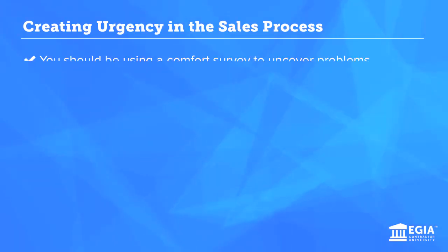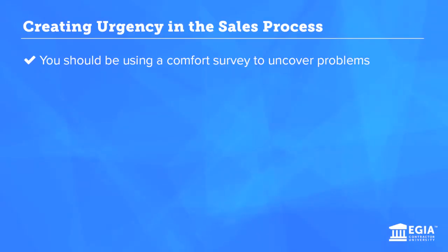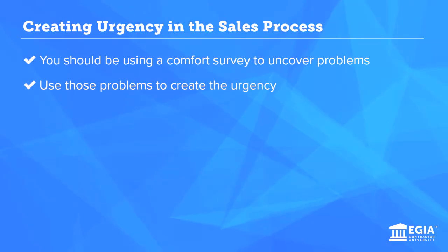You have to start creating urgency early on in the sales process. In the course of the sales process, we should be going through a comfort survey. During the course of that comfort survey, we should be uncovering problems — problems with hot and cold spots, problems with Susie's little allergies, problems with efficiency, problems with high utility bills. You have to uncover those problems and use those to create urgency. We call this process the pain pyramid.